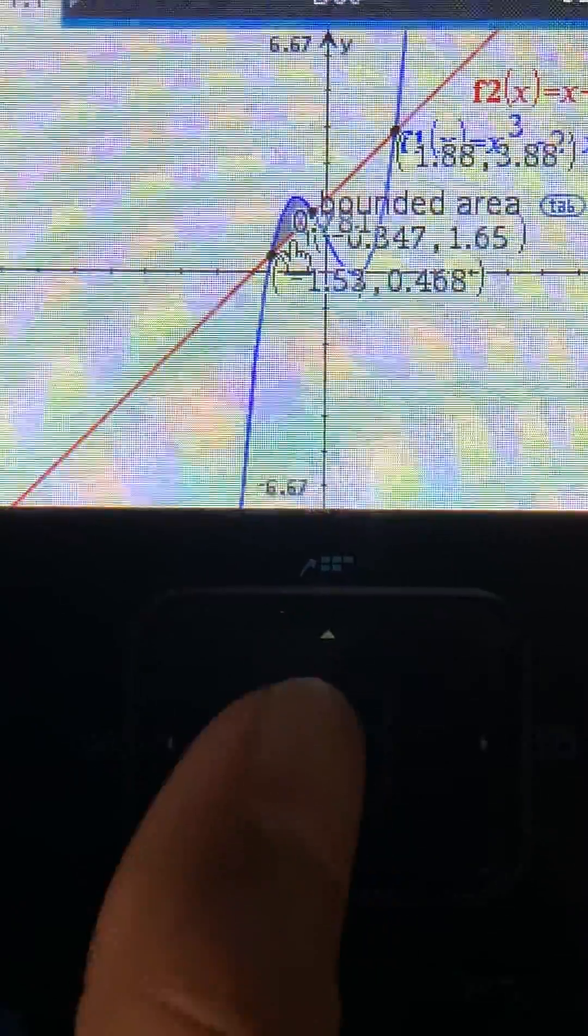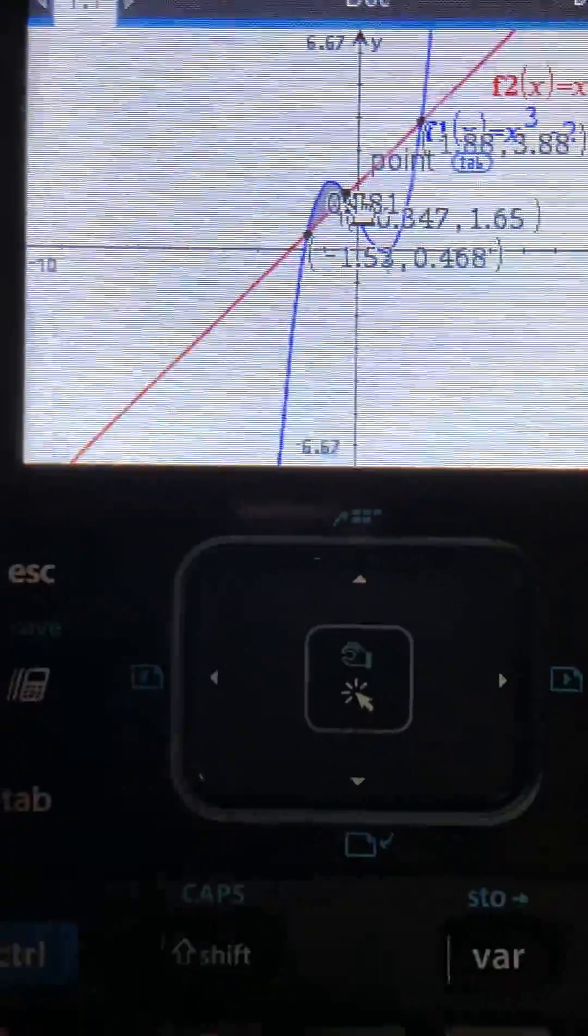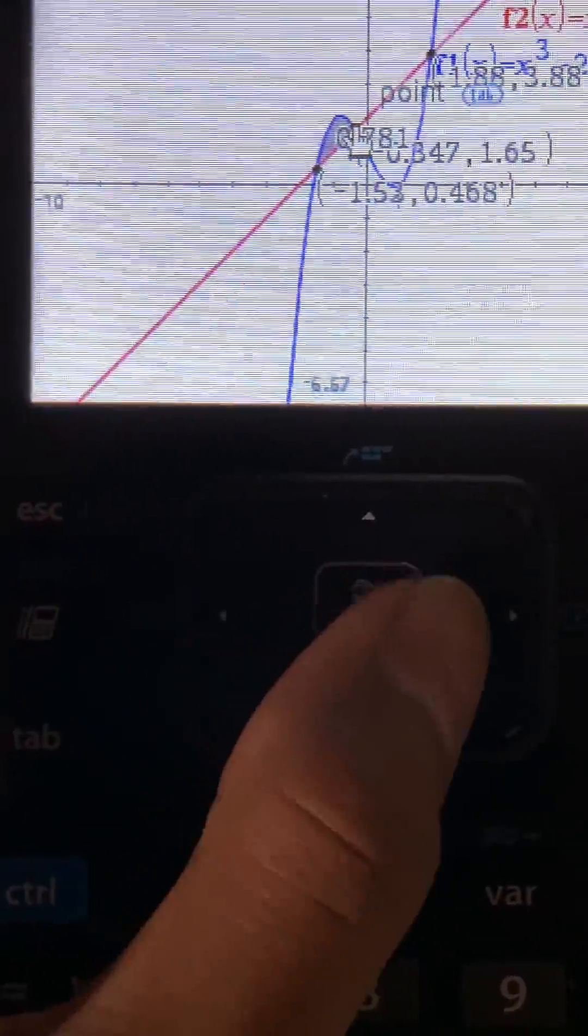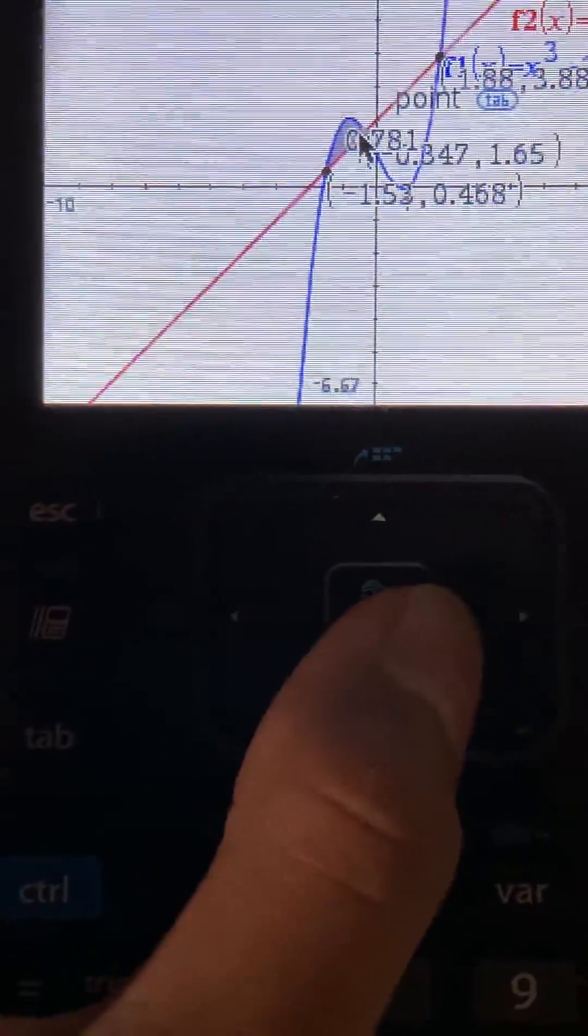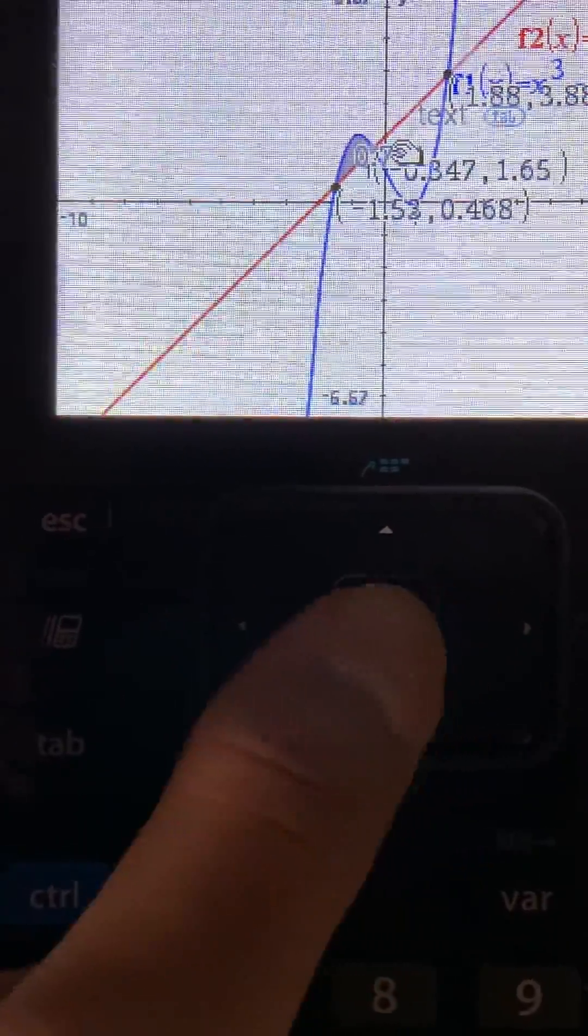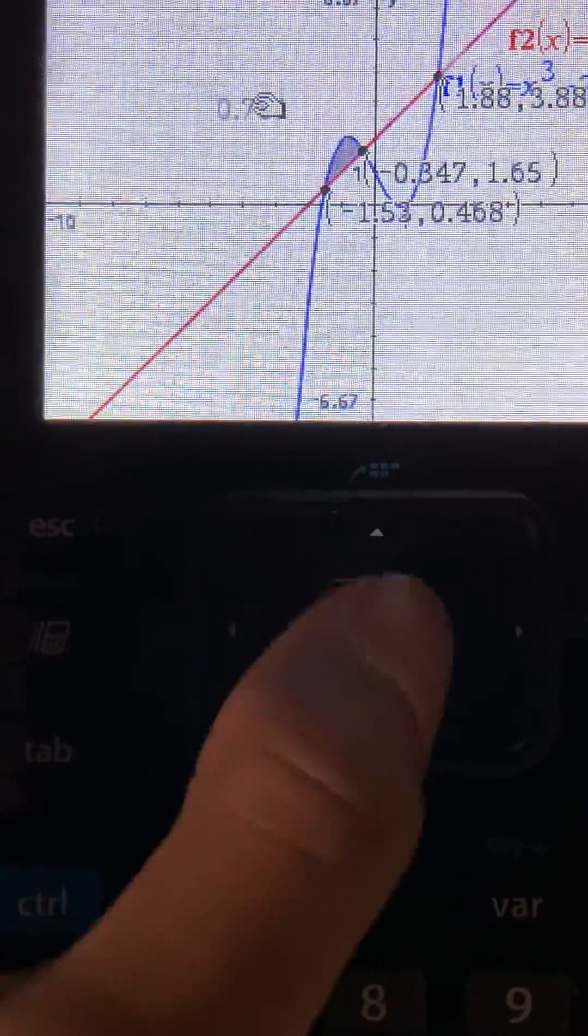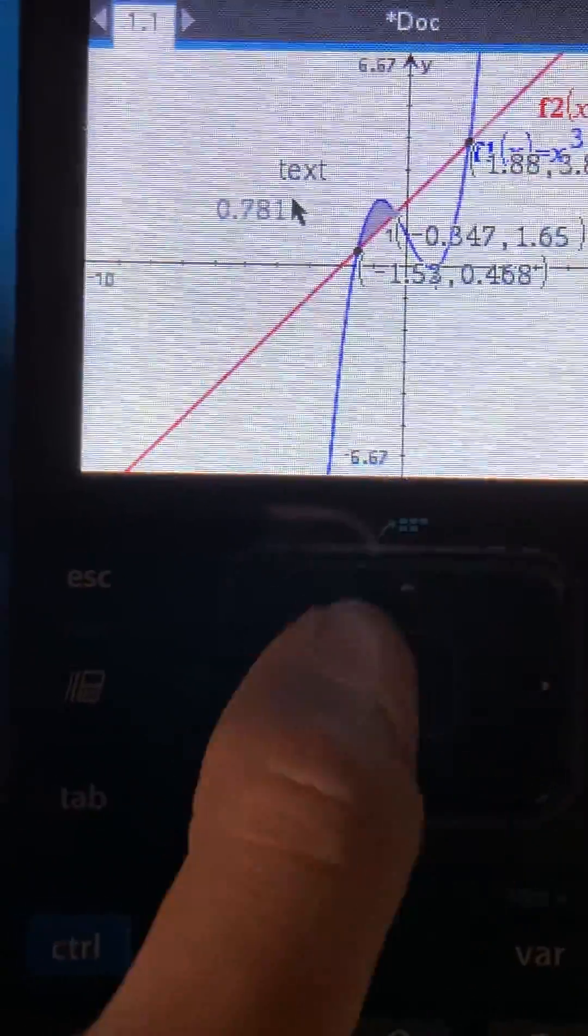Here, it'll show the bounded area, and I'll just move it to the side so it's clear. And it'll be 0.781.